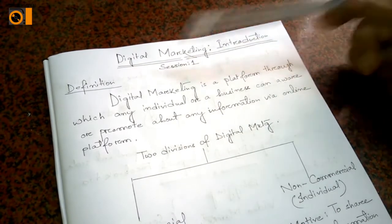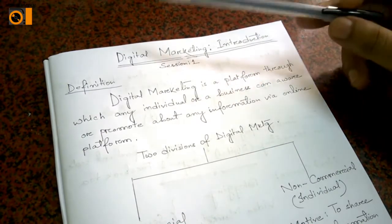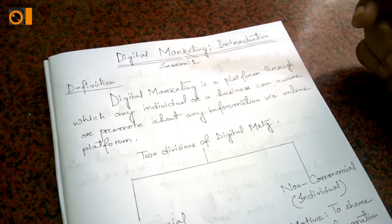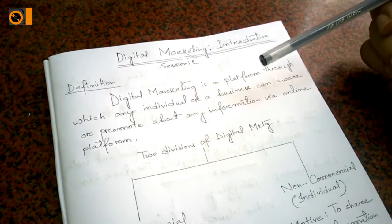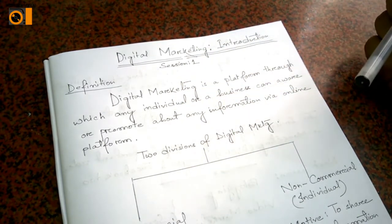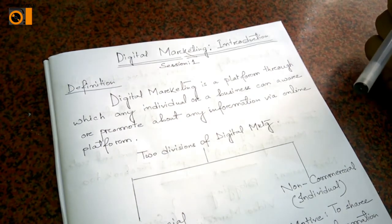Digital marketing - an introduction. What is digital marketing? Digital marketing is a platform through which any individual or a business can aware or promote about any information via online platform.